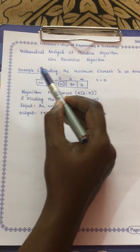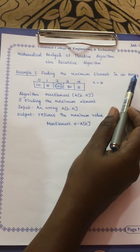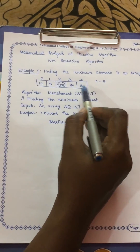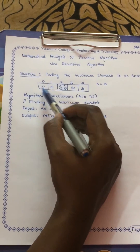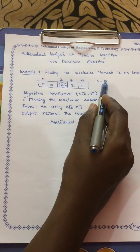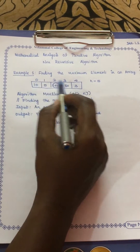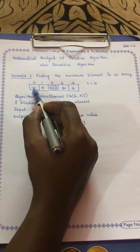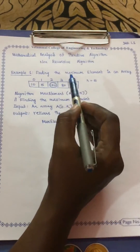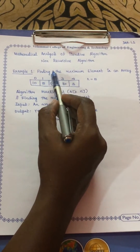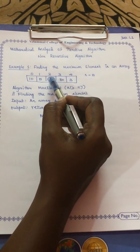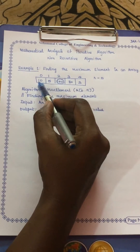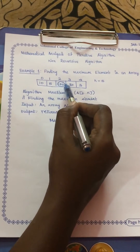The first example is finding the maximum element in an array. Before writing the algorithm, I want to explain the idea. Consider you have an array of size 5, starting from index 0 up to 4, with elements in each cell. The goal is to find the maximum element — in this given example, it is going to be 100.